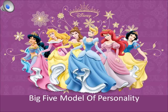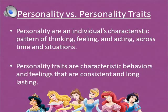Big Five model of personality. First we have personality versus personality traits. Personality is an individual's characteristic pattern of thinking, feeling, and acting across time and situations. Personality traits are characteristic behaviors and feelings that are consistent and lasting. Trait personality theory suggests that a person can be described on the basis of some number of personality traits.